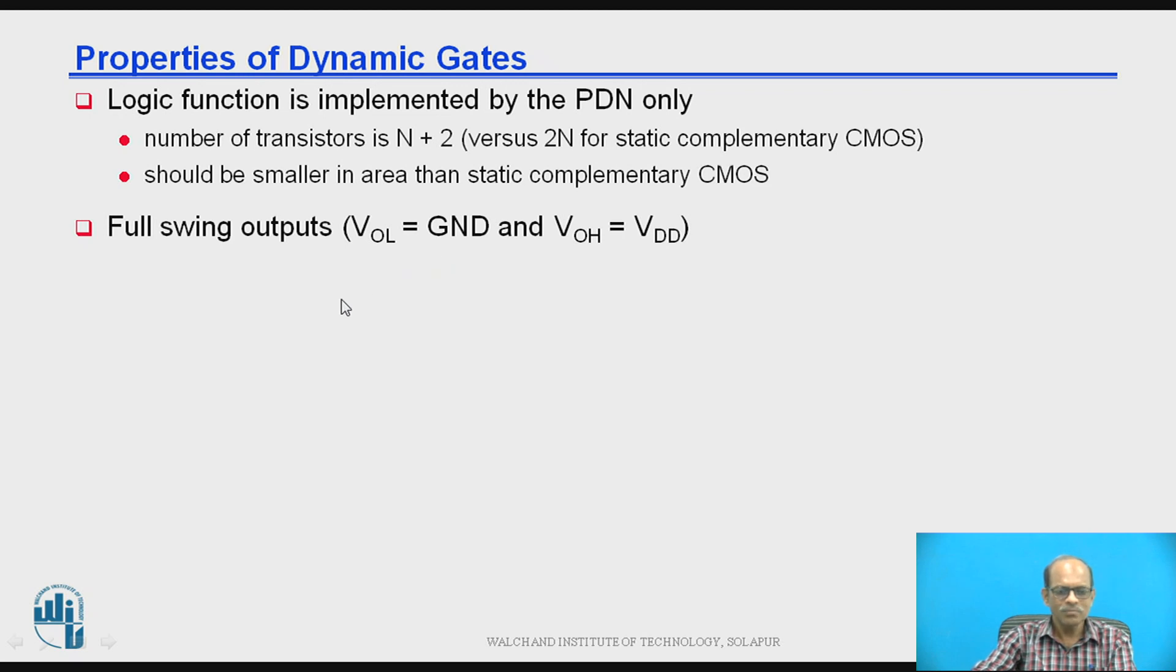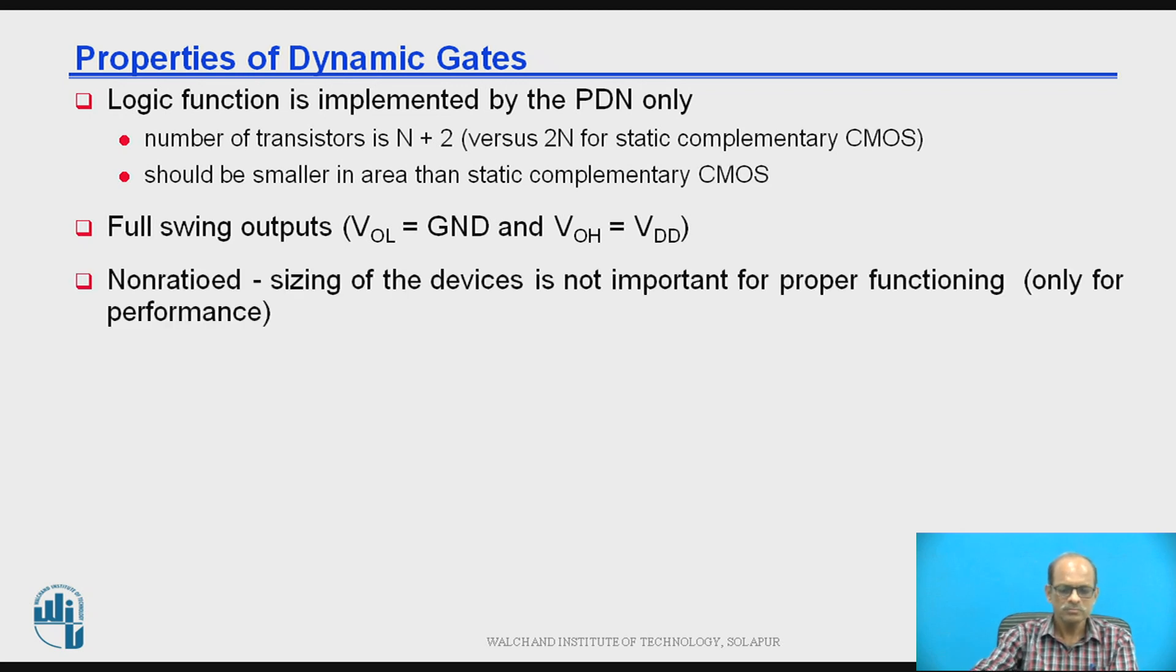Then second property is the voltage swing. So full voltage swing is available. So VOL is 0 and VOH is logic 1 that is VDD. Therefore full voltage swing is available. Now next property is non-ratioed means sizing of the devices is not important for the circuit. So it is ratio-less or non-ratioed.